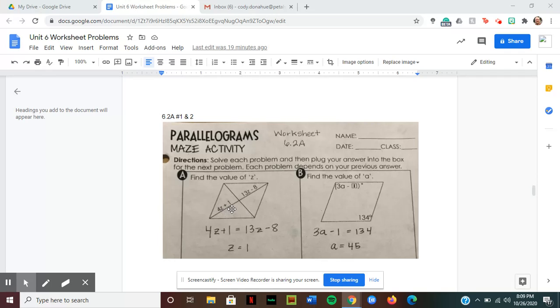This 4z plus 1 and this 13z minus 8 have been created from the original thing that was bisected. Because of that, these two are equal to one another, so I'm going to set them equal.